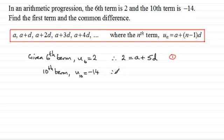And so therefore, if we use this equation again, we've got -14 equals the first term a plus (n-1). n is 10, so take 1 away from that gives us 9, and times it with d. And so that's our second equation.